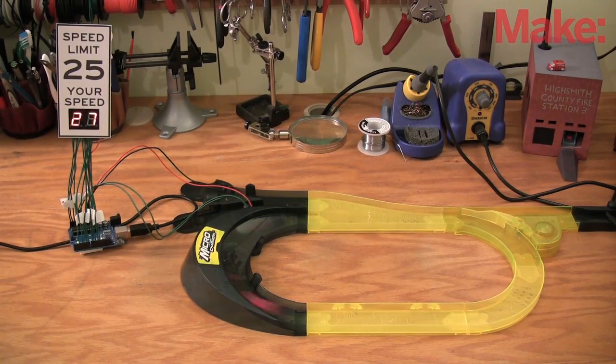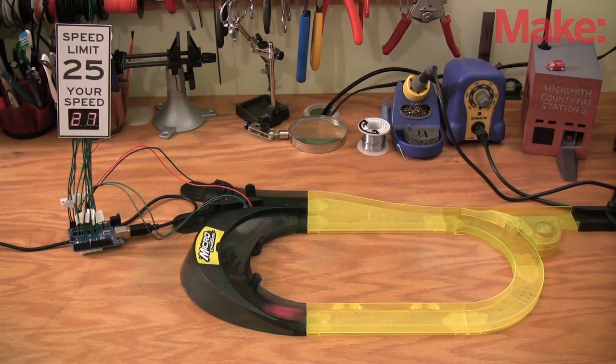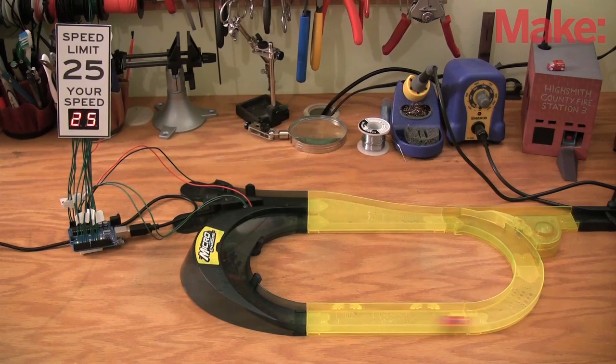I tweaked the code to flash the sign when the speed limit is exceeded, just like a real speed limit trailer. Now that we have a speed limit and we know when it's being broken, how do we enforce it?